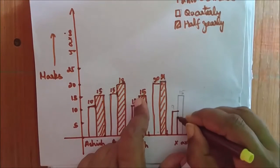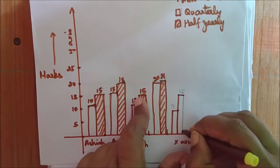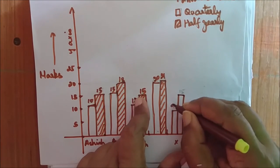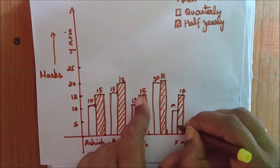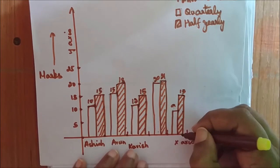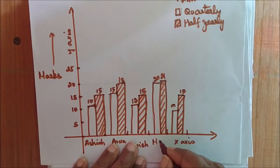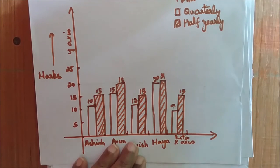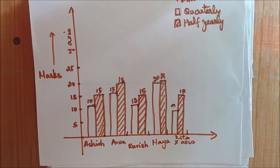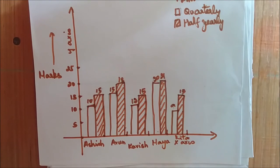Similarly, the next is Rita. She scores how much? 9 marks in quarterly and 15 marks in half-yearly. After Kavish, it is Maya, and then it is Rita. So the x-axis represents the students and the y-axis represents the marks. I hope all of you understood how to draw a bar chart. Thank you, students.